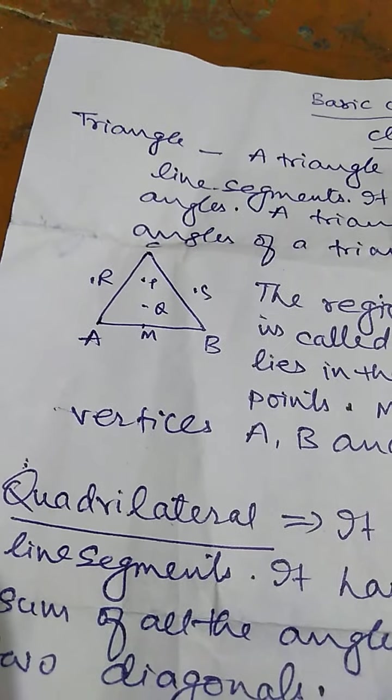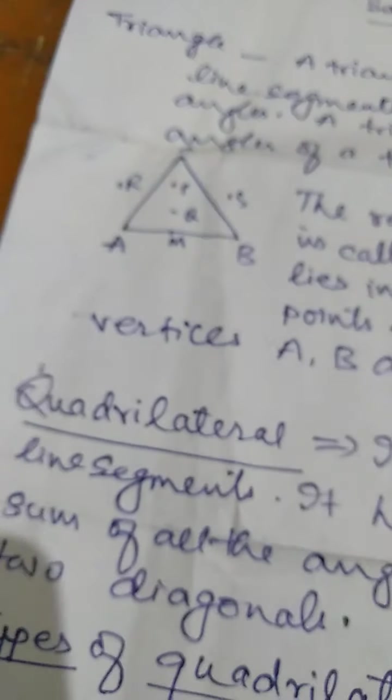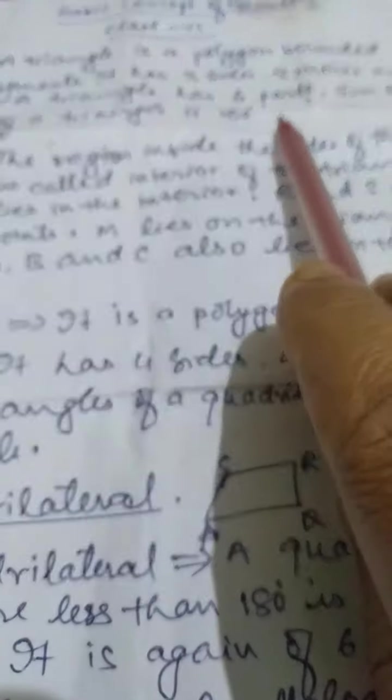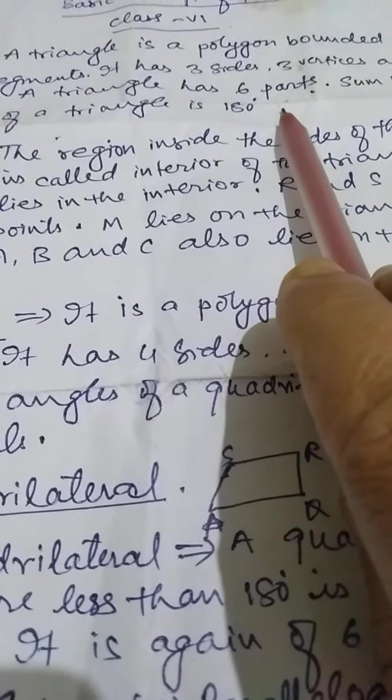You know, a triangle is a polygon bonded by 3 line segments. It has 3 sides, 3 vertices and 3 angles. A triangle has 6 parts. Sum of all the angles of a triangle is 180 degree.